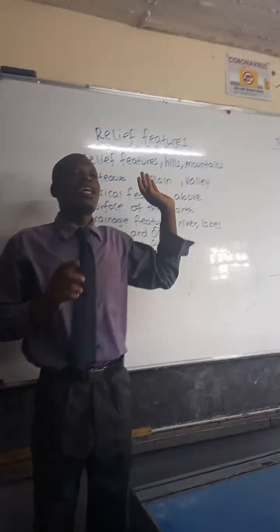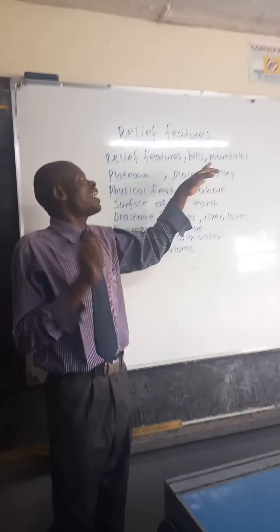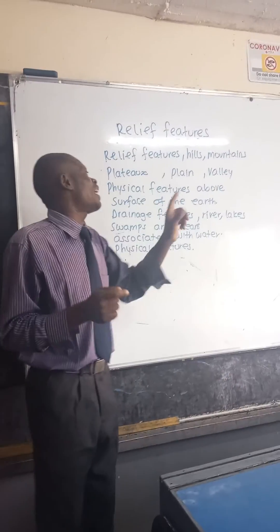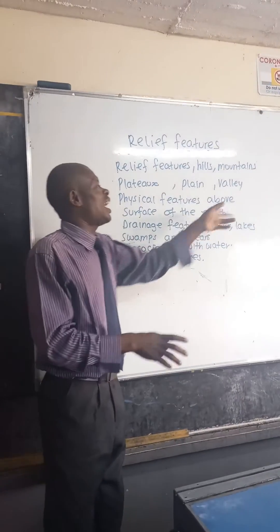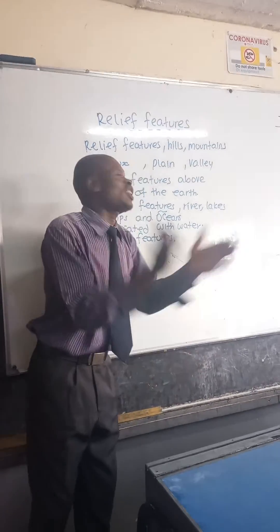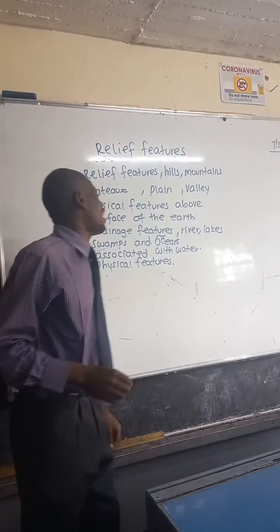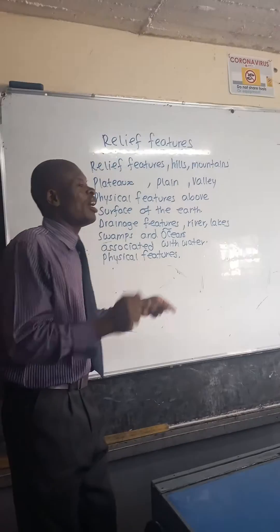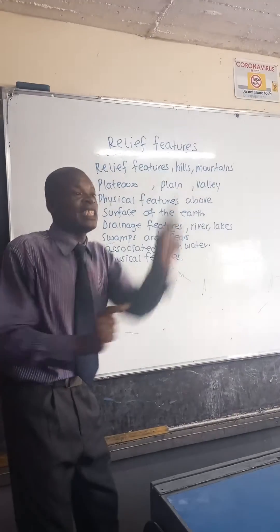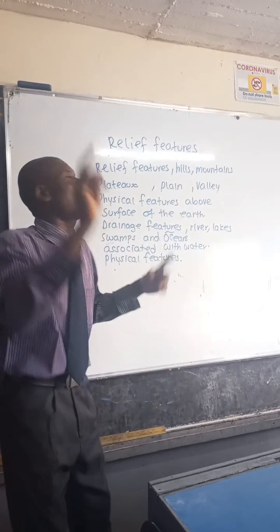Are you ready? Okay, let us go. Relief features: hills, mountains, plateaus, plains, valley — physical features above the surface of the earth. Drainage features: river, lake, swamps, and ocean — associated with water. Physical features.